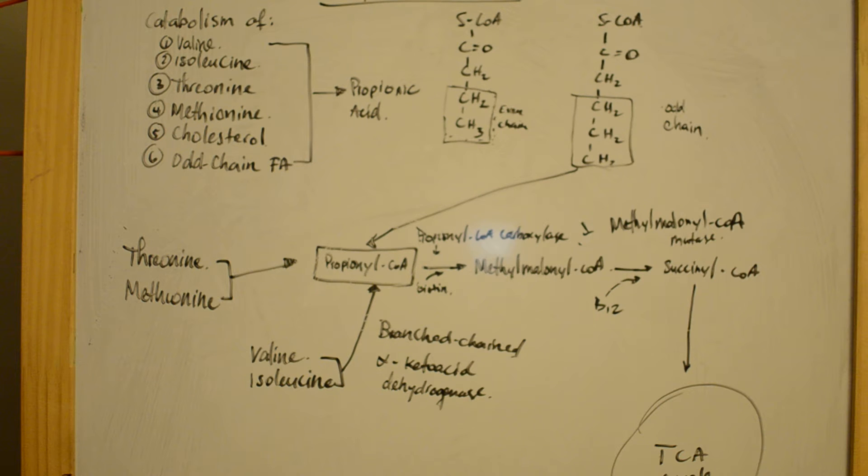Propionic acidemia is clinically characterized by poor feeding, vomiting, hypotonia, lethargy, dehydration, and an anion gap acidosis.